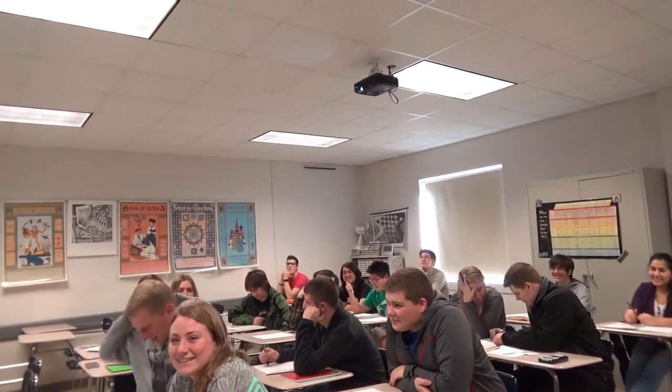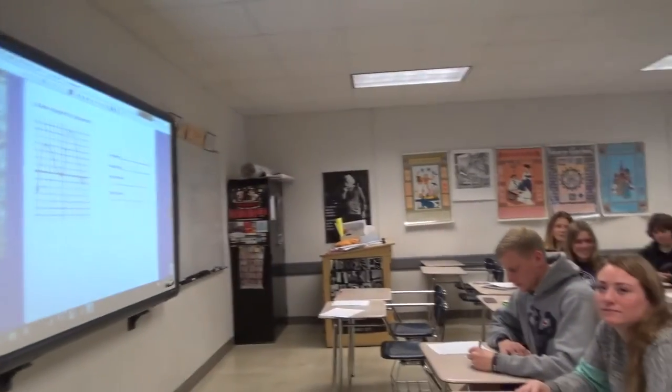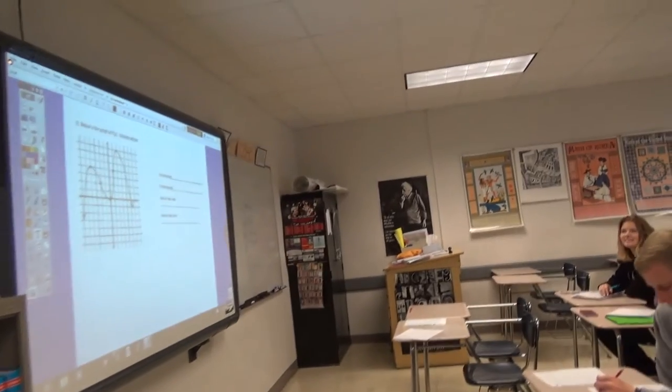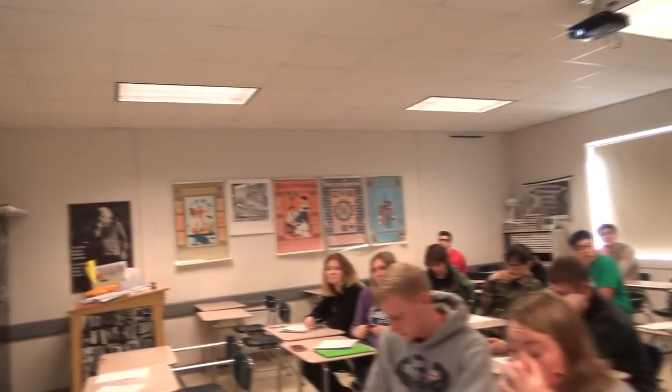Okay, so first thing you have to identify is when you look at this graph, what the graph represents. F-prime. So, what is this graph actually representing for us? The slope of the first graph. Exactly. This is the slope of the first graph.